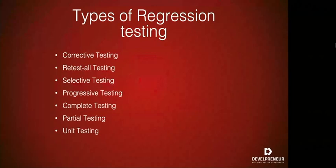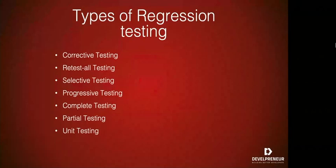The first type is corrective regression testing. Here we analyze the impact of new code on the software's already existing code, and we use a subset of existing test cases to reduce the cost and effort needed for retesting. The next type is retest all regression testing. As the name suggests, this technique involves reusing all the test cases and testing all possible aspects of the product or software, even when a new change is introduced. This technique is time-consuming and very tedious.